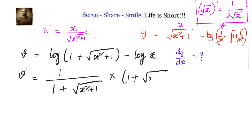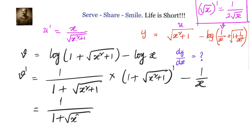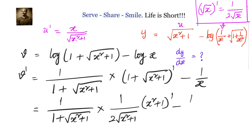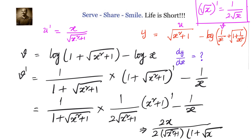By the chain rule, we also need the derivative of 1 plus square root of x squared plus 1, which is 1 by 2 root of x squared plus 1, times the derivative of x squared plus 1 equals 2x. The derivative of log x is 1 by x. So v dash equals 2x by 2 root of x squared plus 1, divided by 1 plus root of x squared plus 1, minus 1 by x. This gives us v dash equals x by square root of x squared plus 1 into 1 plus square root of x squared plus 1, minus 1 by x.